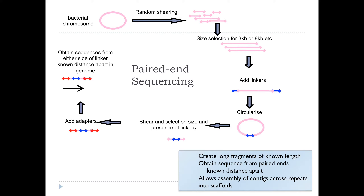What we do now commonly is so-called paired-end sequencing, where adapters are added to the ends of your sequence and you sequence in from both ends. You may or may not meet in the middle, but you know the precise spacing of those sequences. Taking that information into account allows you to assemble contigs across repeats into scaffolds in some cases — so although you might not know exactly what's between two contigs, you know that they belong a certain number of base pairs apart.